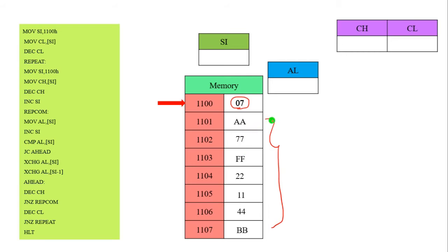Now we are going to explain step by step using this program. The first step: MOV SI, 1100H — the SI register is used as a pointer for the array. This 1100 is moved into the SI register. The next step: MOV CL, [SI]. This memory location contains the value 07, and this 07 value is moved into the CL register.